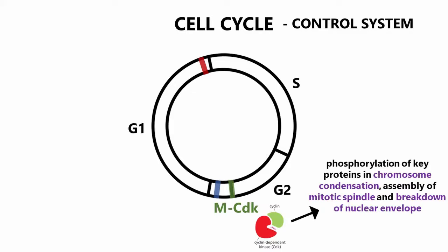The entry into mitosis is dependent on active M-CDK. It induces several events by phosphorylation of key proteins, most notably the chromosome condensation by phosphorylating subunits of condensin, the assembly of the mitotic spindle by phosphorylating microtubular associated proteins and motor proteins, and the breakdown of the nuclear envelope by phosphorylating inner-nuclear envelope proteins and laminar components.